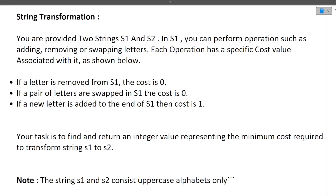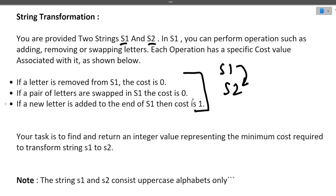So guys, the name of this question is String Transformation. You are provided two strings s1 and s2. In s1 you can perform operations such as adding, removing, or swapping the letters. Each operation has a specific cost value associated with it. If a letter is removed from s1 the cost is zero. If a pair of letters are swapped in s1 the cost is zero. If a new letter is added to the end of s1 then the cost is one. Your task is to find and return an integer value representing the minimum cost required to transform s1 to s2.